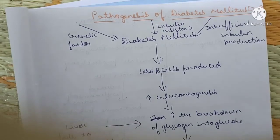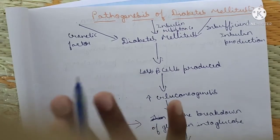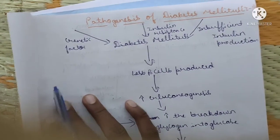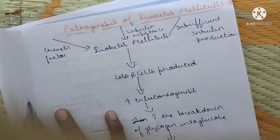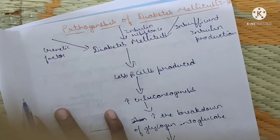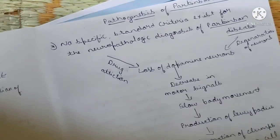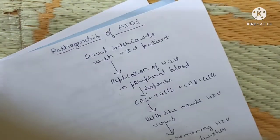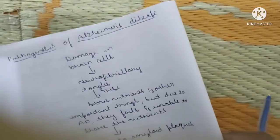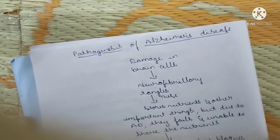Assalamu alaikum, my dear brothers and sisters. Once again welcome to my YouTube channel. As usual, in yesterday's lecture we discussed about five very important pathogeneses: diabetes, asthma, Parkinson's, tuberculosis, and AIDS. The remaining five will be discussed in this lecture.